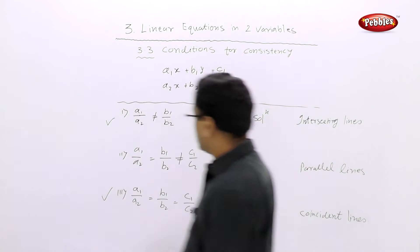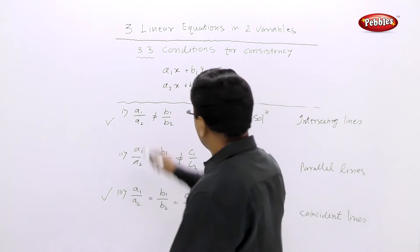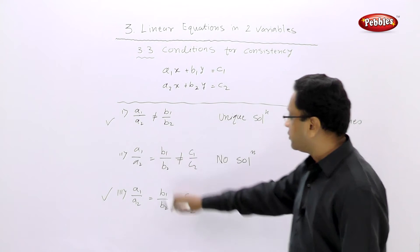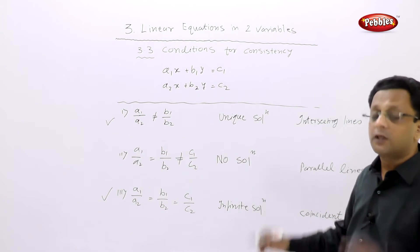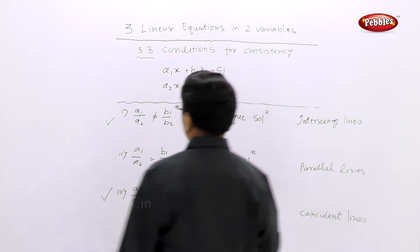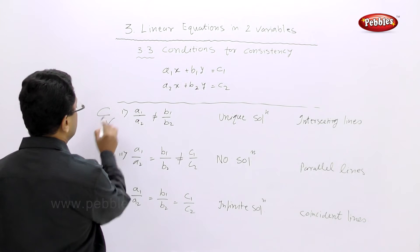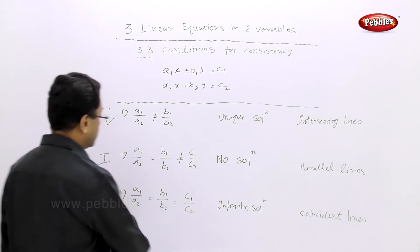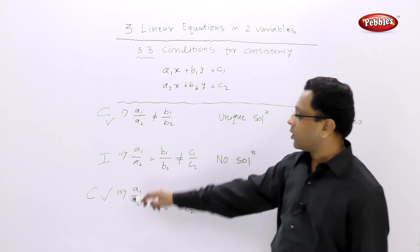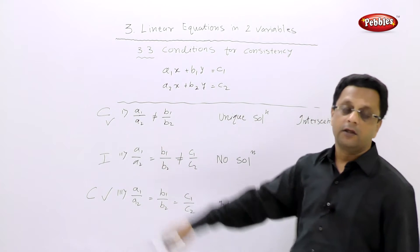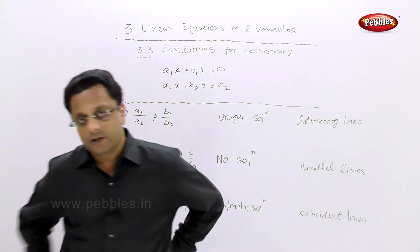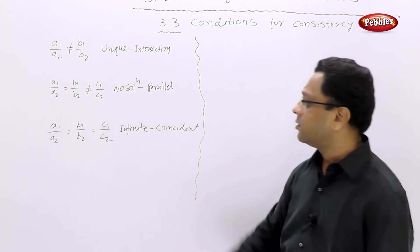Conditions 1 and 3 are called consistent because they have a solution — the first gives a unique solution and the third gives infinitely many solutions, but both have solutions. Condition 2 is called inconsistent. So the first and third are consistent equations, while the second case gives inconsistent equations.